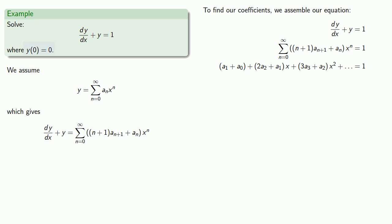Since we know y of 0 is equal to 0, and by assumption y is our power series, we can compare the two. If x equals 0, our power series becomes... and y is just 0, and so a0 is equal to 0.